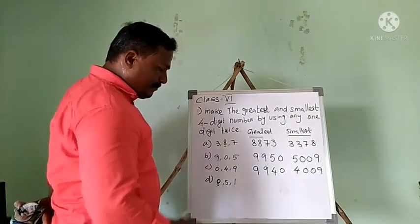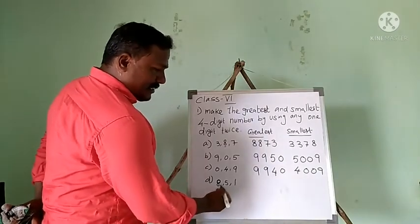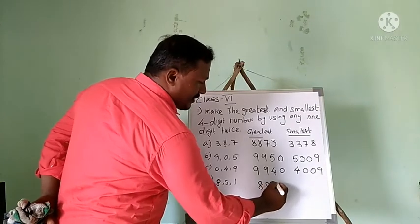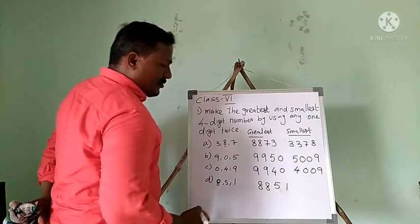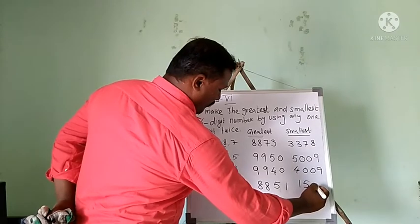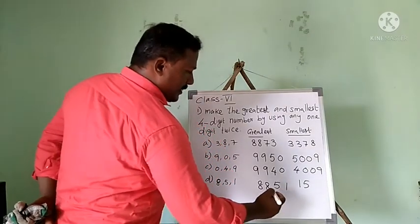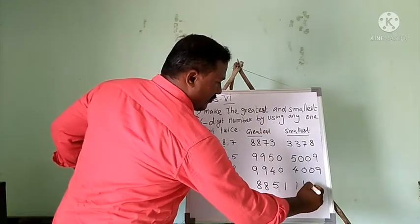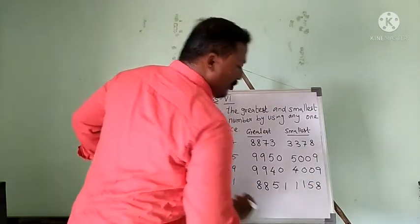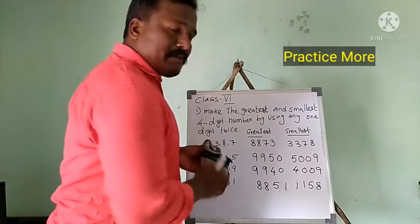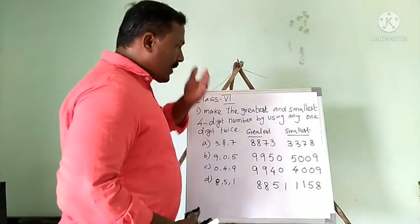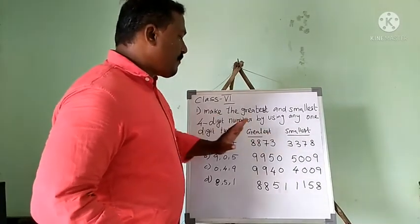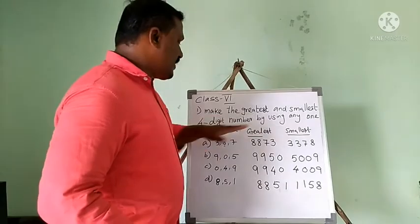Another example with digits 8, 5, 1. For the greatest number, write big number first — 8 two times, then 5, then 1, giving 8851. For the smallest number in ascending order — 1 two times, then 5, then 8, giving 1158. That is how you find the greatest and smallest four-digit number by using any digit twice.